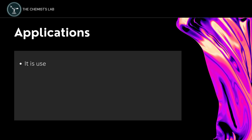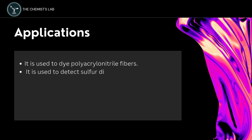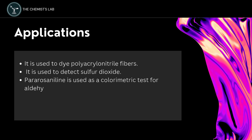Parorosaniline is used to dye polyacrylonitrile fibers. It is also used to detect sulfur dioxide, and it is used as a colorimetric test for aldehydes in the Schiff test.